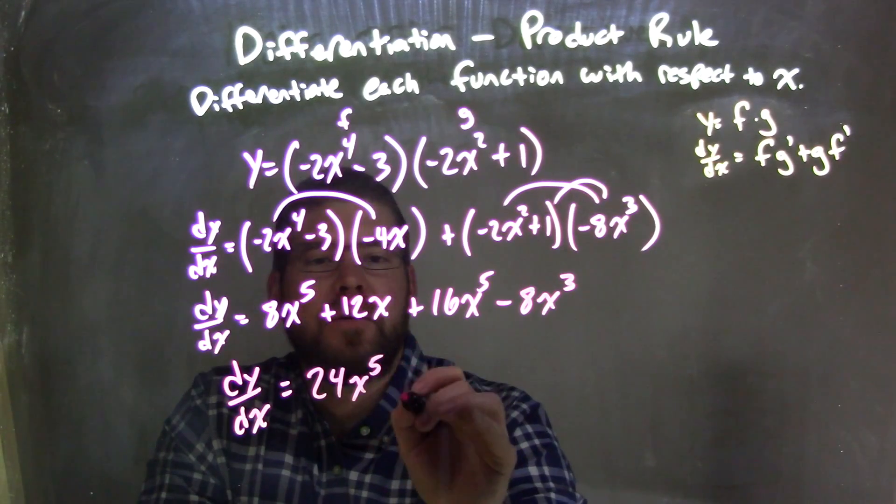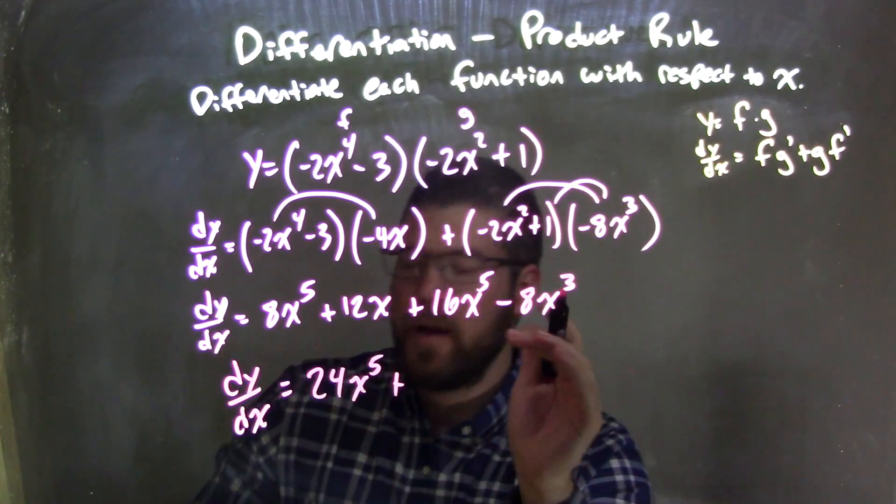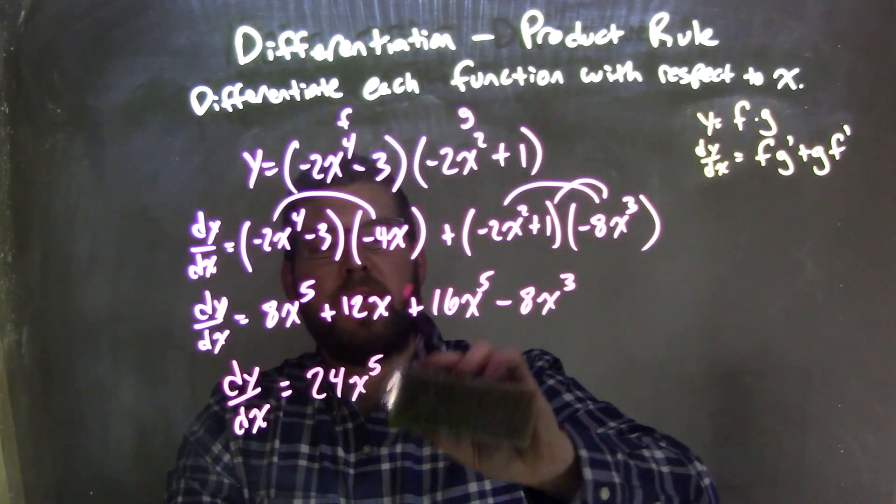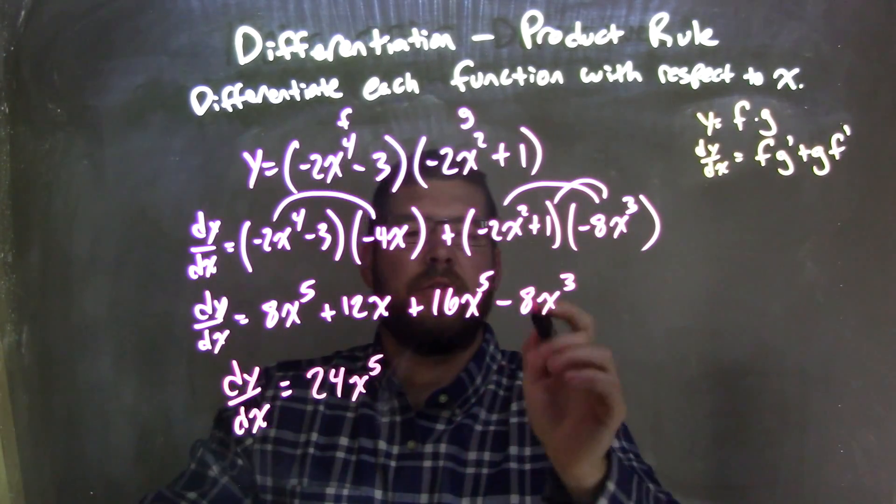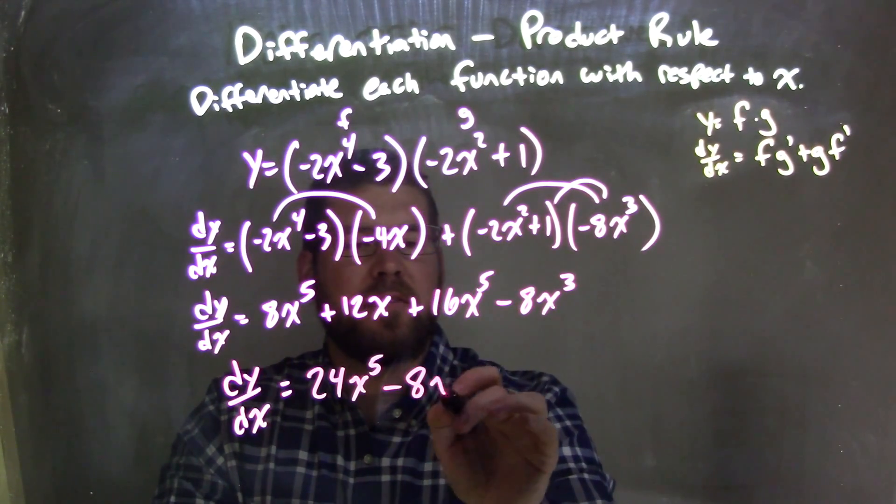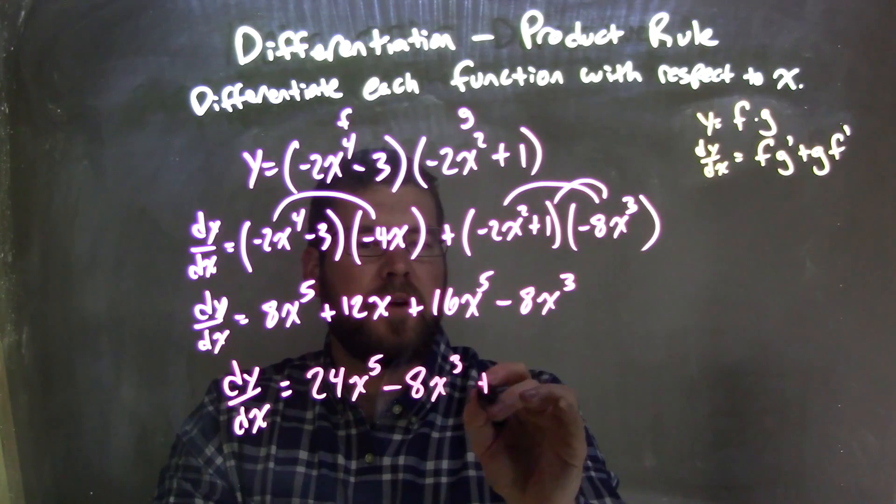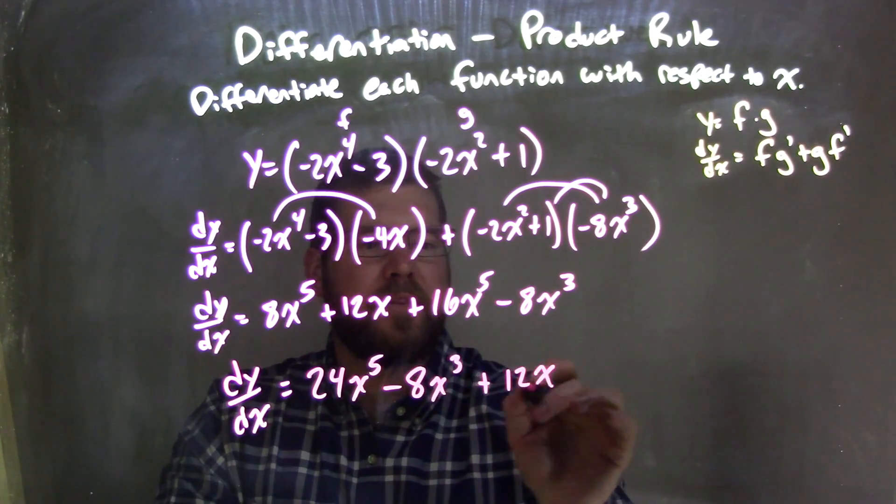Plus, or minus, the next one's going to be the 8x to the 3rd power, so we minus 8x to the 3rd power, and then the last term here is plus 12x, and there we go.